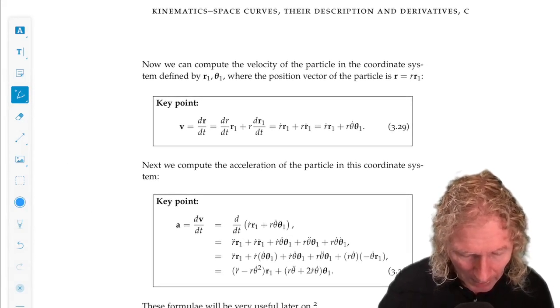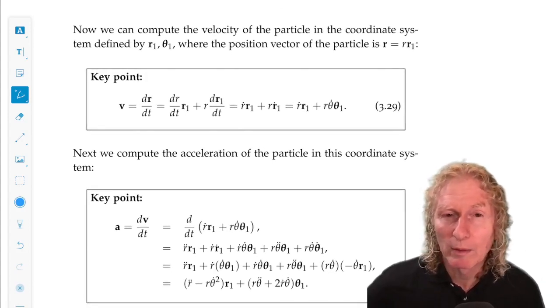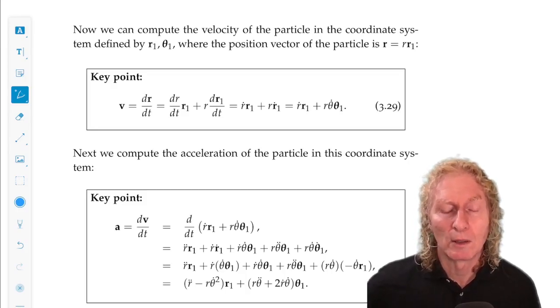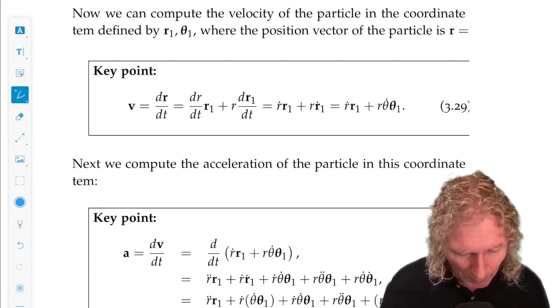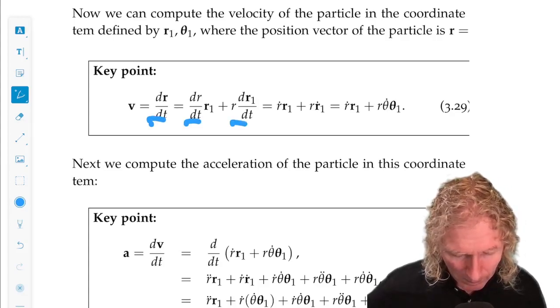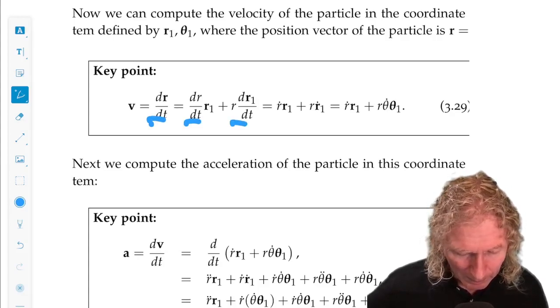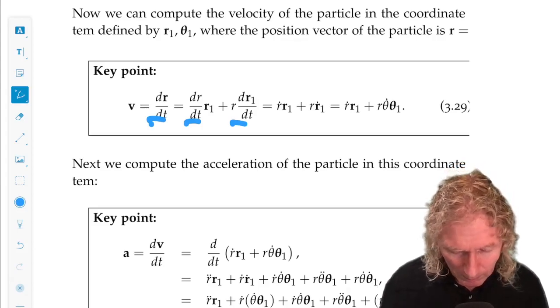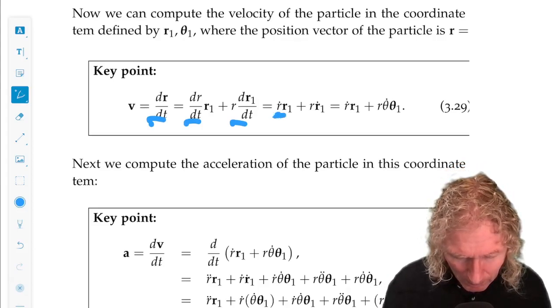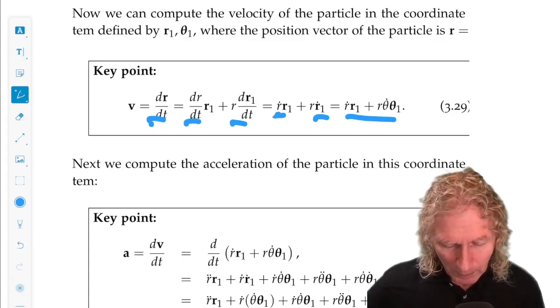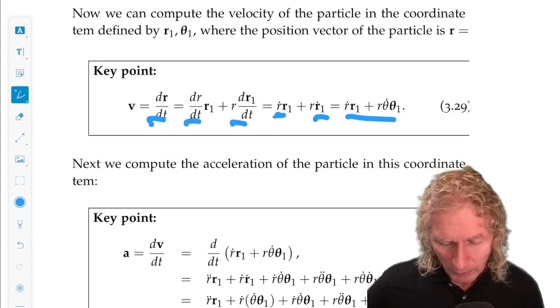So with those in hand, we can now compute the time derivative of r in the r1 theta1 coordinate system, and the second derivative of r with respect to time in the r1 theta1 coordinate system. So the first one, we just use the product rule, dr/dt. Because r is length of r, magnitude r times r1, and using the expressions we've already derived, dr/dt is r dot, magnitude r dot, r1 plus r theta dot theta1.